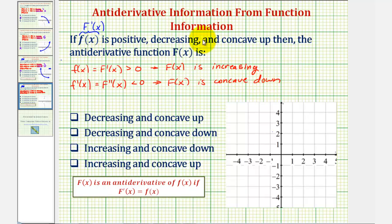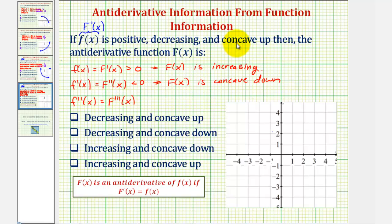Finally, we're told that f of x is concave up. If f of x is concave up, that indicates the second derivative of f would be positive, which means the third derivative of big F would also be positive. However, we don't need this information to answer the question, because we now know that big F is increasing and concave down, and therefore this would be the answer.